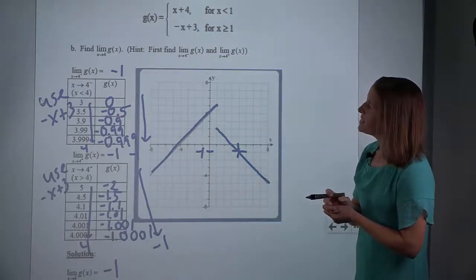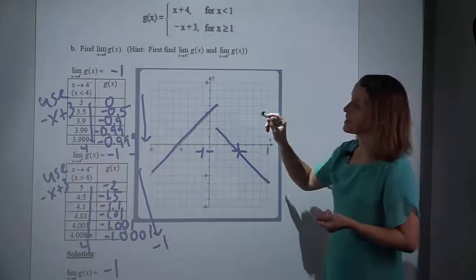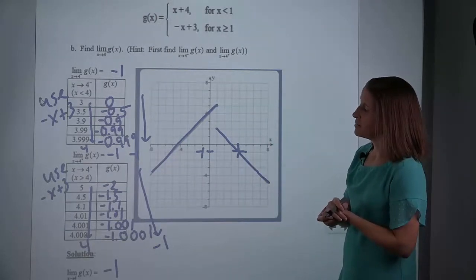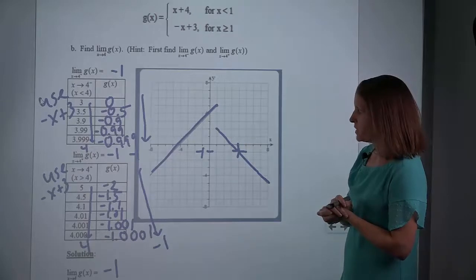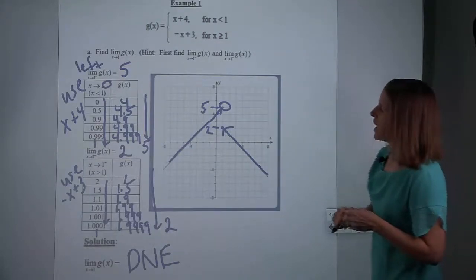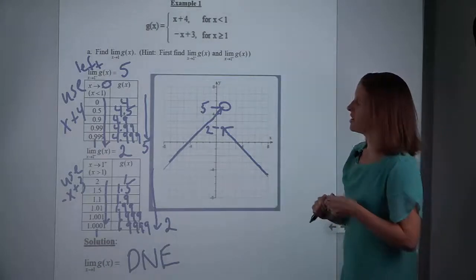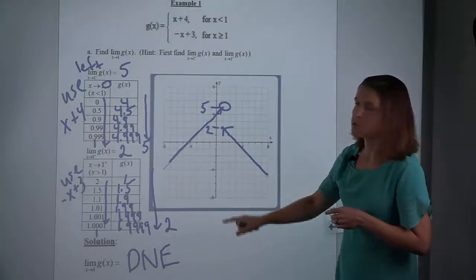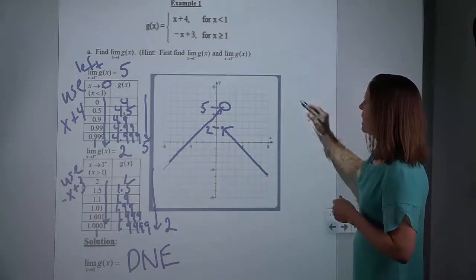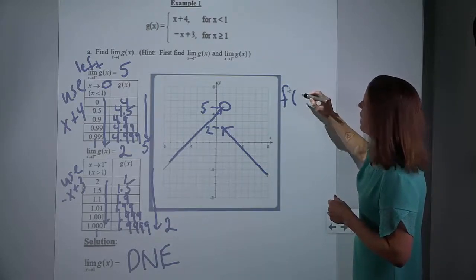So that is the idea of a limit. It is not about what's happening at the point; it is about what's happening near that point. I actually want to do a little additional question here. The limit as x approached 1 did not exist. If I asked you instead: what is f of 1? This is back to pre-calculus, before we knew anything about limits.